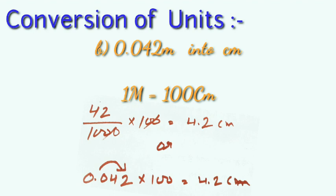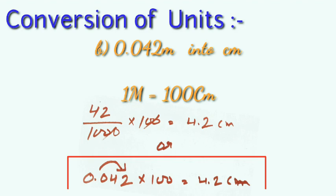Another way to apply this: if we have to multiply by 10, 100, or 1000, we shift the decimal to the right. So 0.042 multiplied by 100 means the decimal shifts 2 digits to the right, giving us 4.2 centimeters.